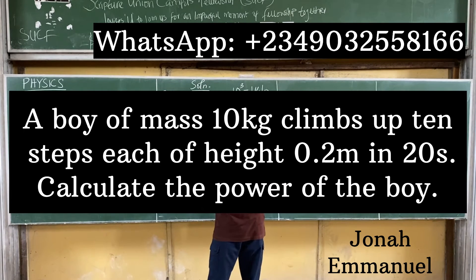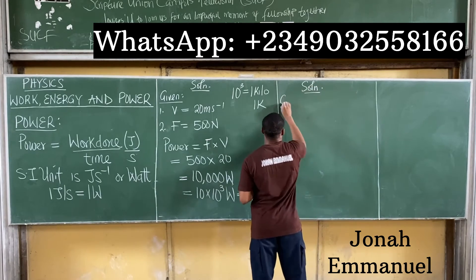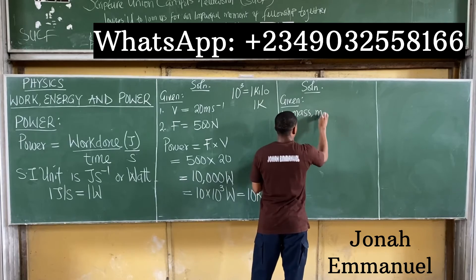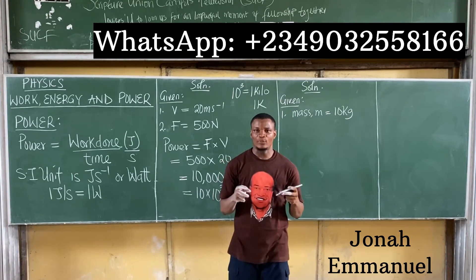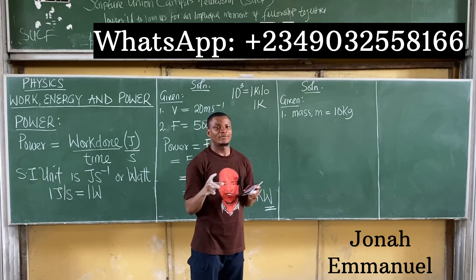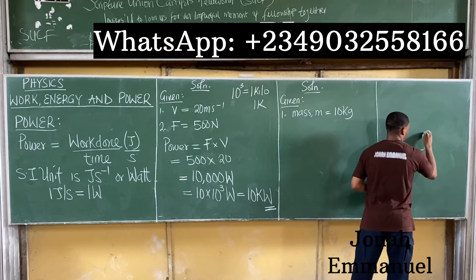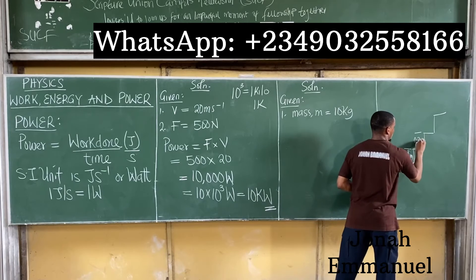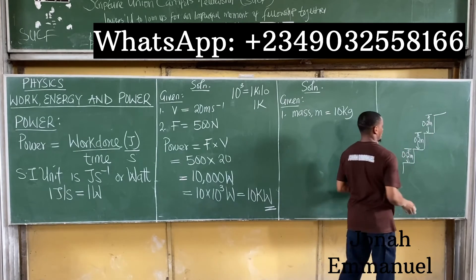Example two: A boy of mass 10 kg climbs up 10 steps, each of height 0.2 meters, in 20 seconds. Calculate the power of the boy. Given: mass m = 10 kg. Each step is 0.2 m high, and there are 10 steps.